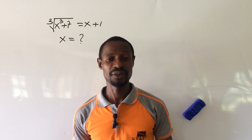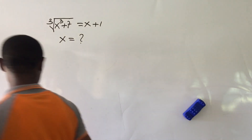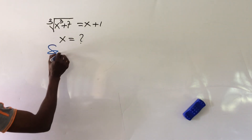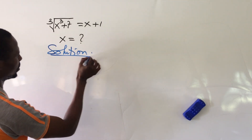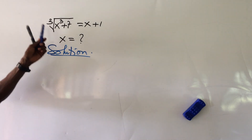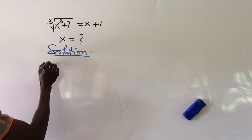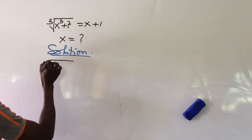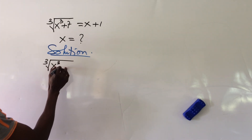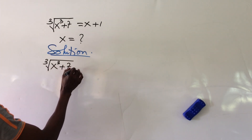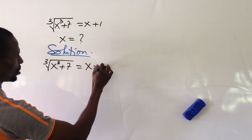Now let's go into today's challenge without much waste of time. We take our solution. Let's pull down the question: the cube root of x to the power of 3 plus 7 equals x plus 1.